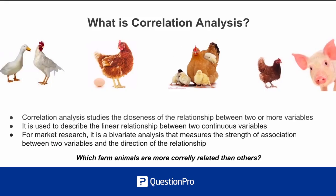In a nutshell, correlation analysis studies the closeness of relationships between two or more variables. It is used to describe the linear relationship between two continuous variables. And for market research, it is a bivariant analysis that measures the strength of association between two variables and the direction of the relationship.